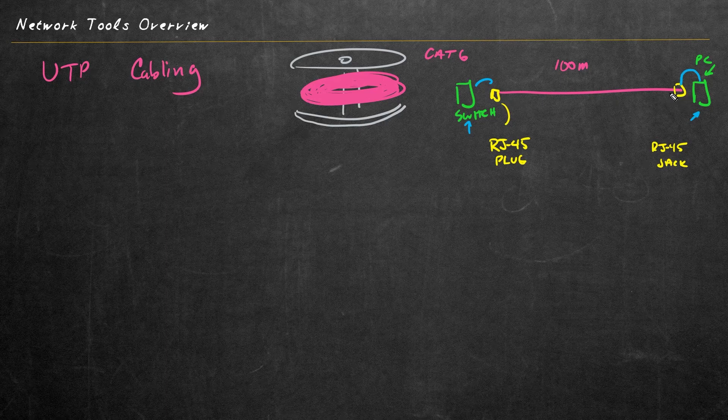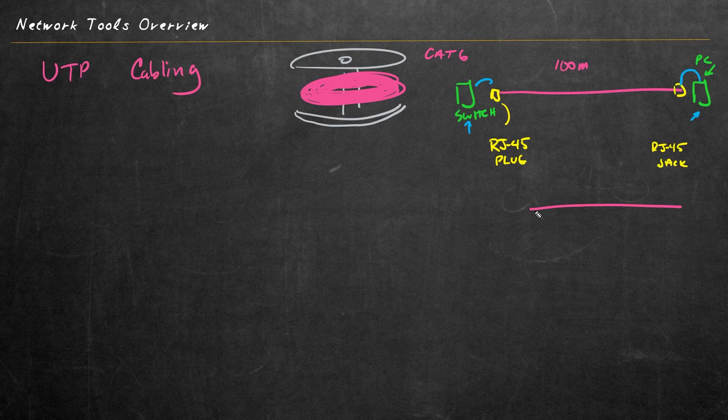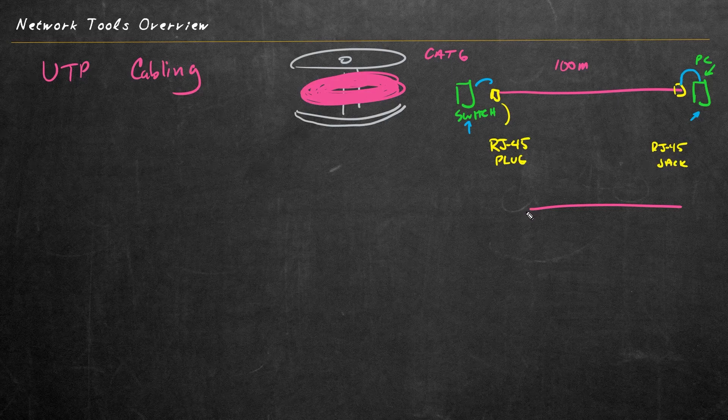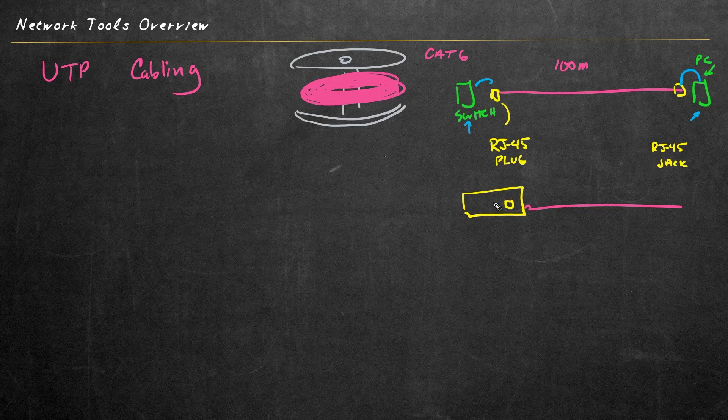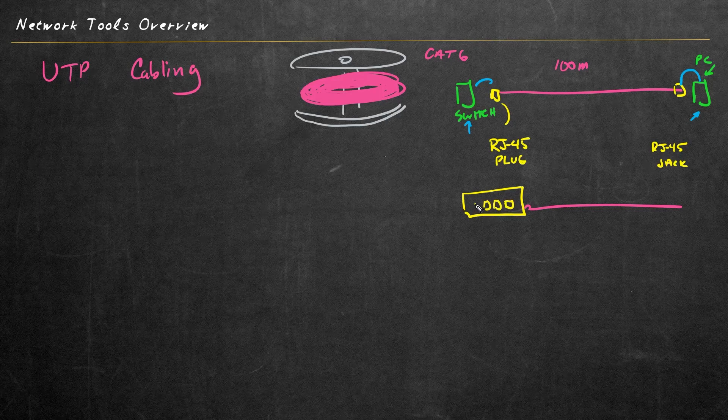Another option for terminating that cable instead of using an RJ45 plug or an RJ45 jack would be to terminate one end of the cable into a patch panel. So we could have a patch panel here, and on the back end there's connectors where we can terminate an Ethernet run. And then on the front side of this patch panel, it has RJ45 jacks.